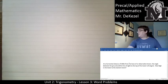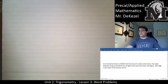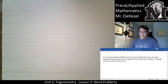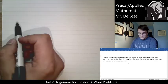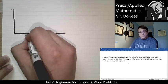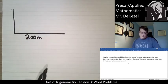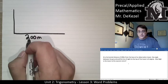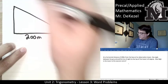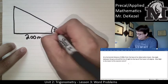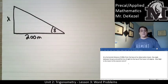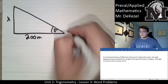Next problem: from a horizontal distance of 200 meters from the base of an observation tower, the angle between the ground and the line of sight to the top of the tower is 8 degrees. We want to know how high the tower is. We have two pieces of information and want to find a third — we can do that using our trig ratios.